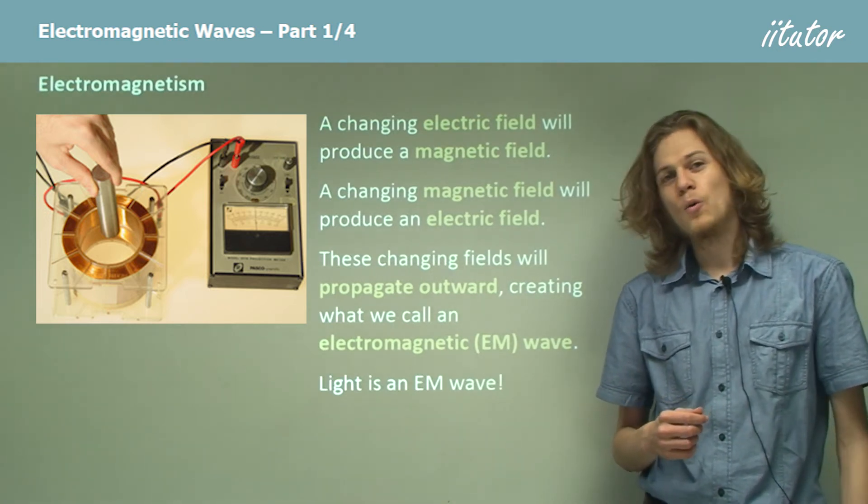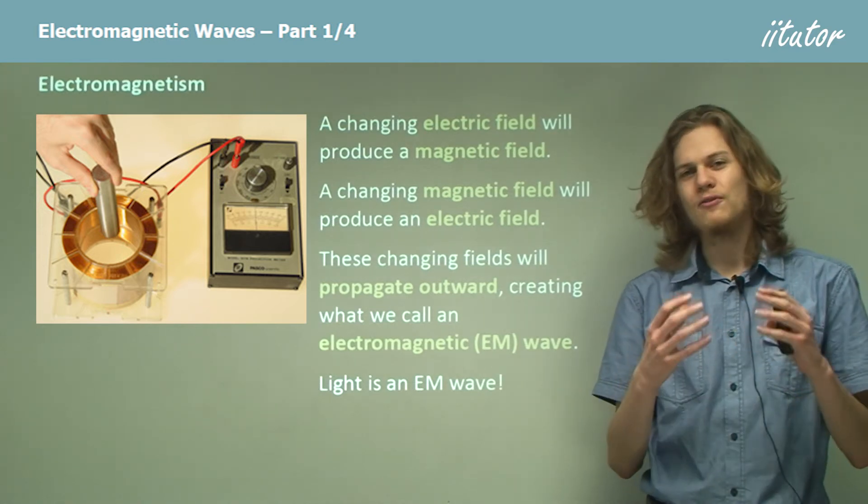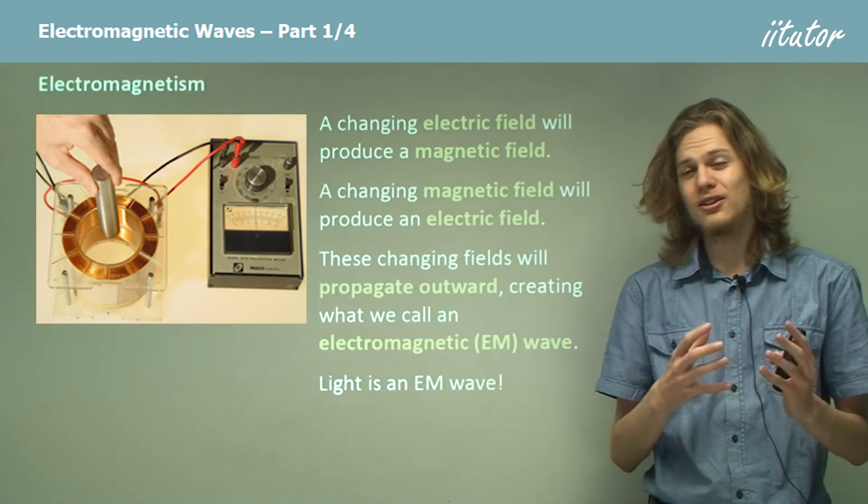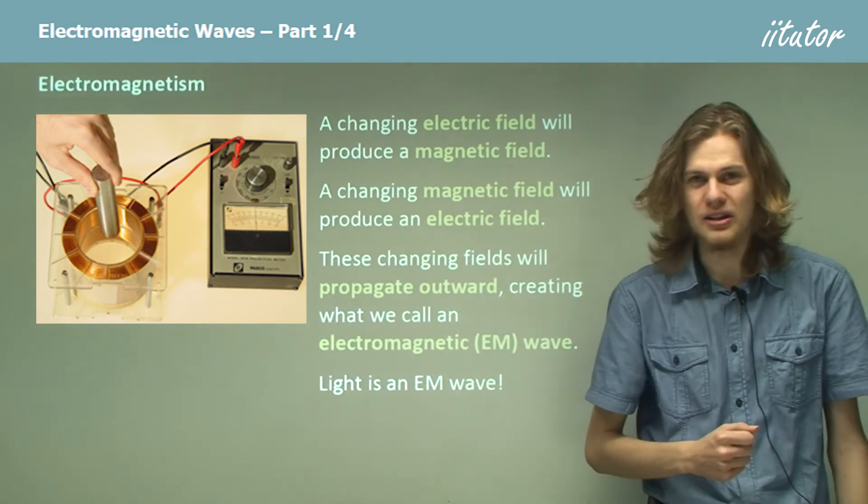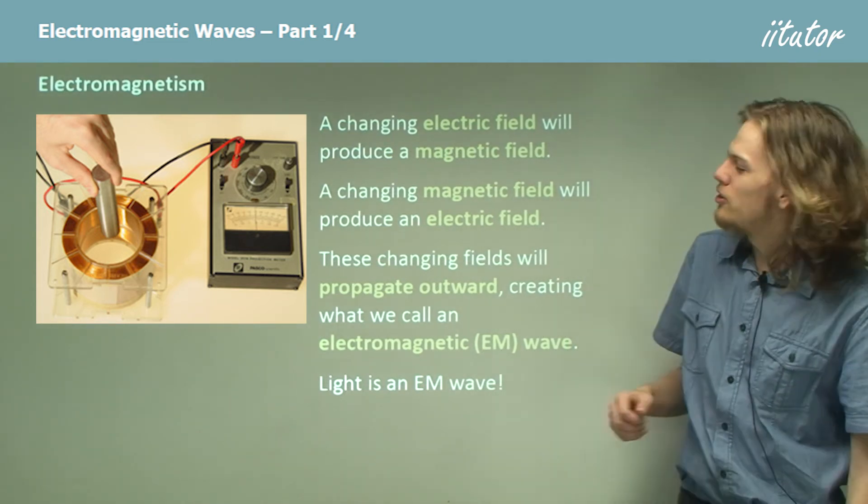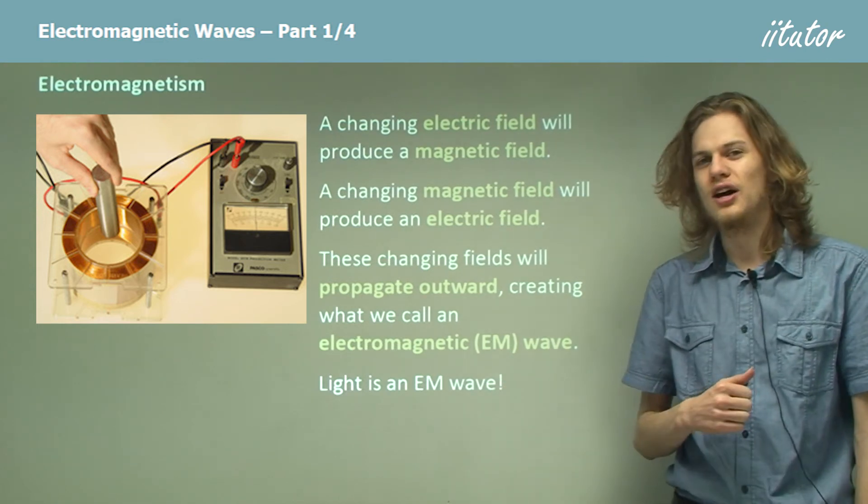One of the amazing discoveries of the 19th century was that light was in fact a phenomenon of electric and magnetic fields, a form of wave that was propagating along very quickly indeed. But it turns out that light is not the only type of electromagnetic wave.